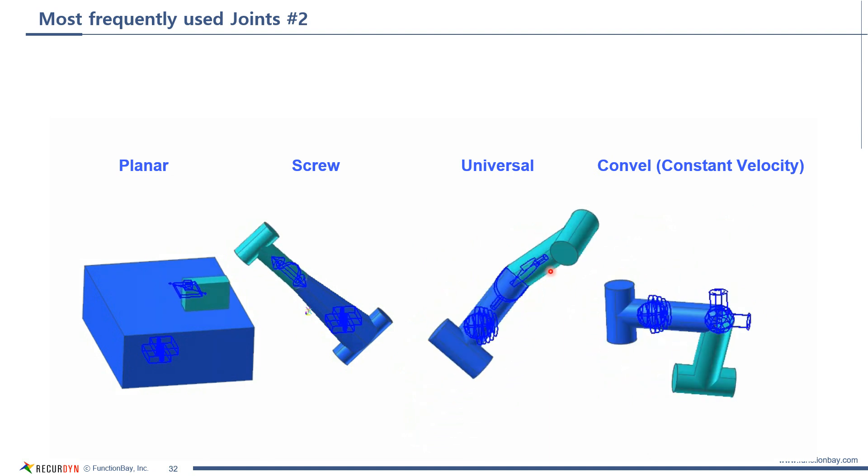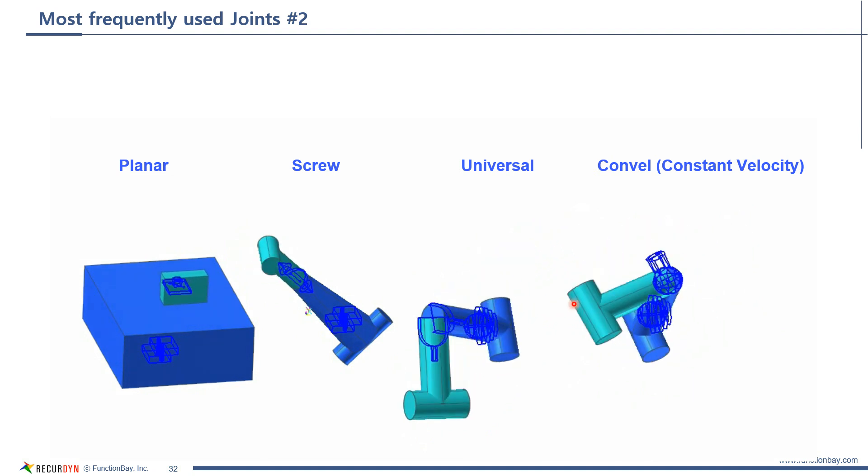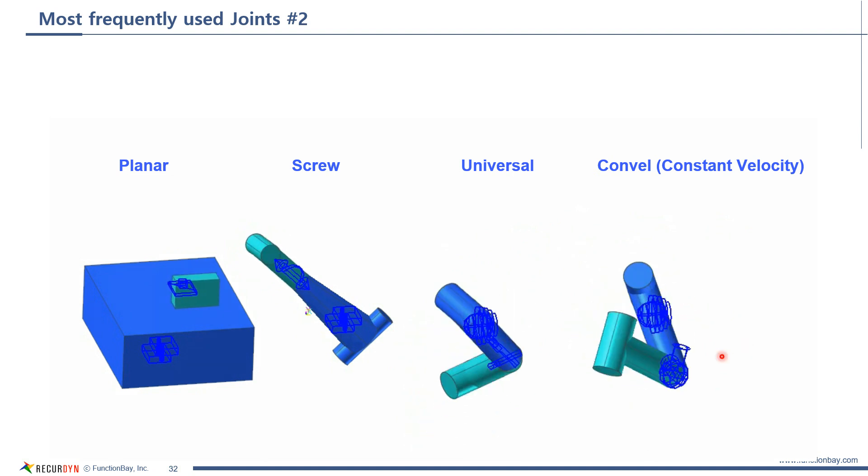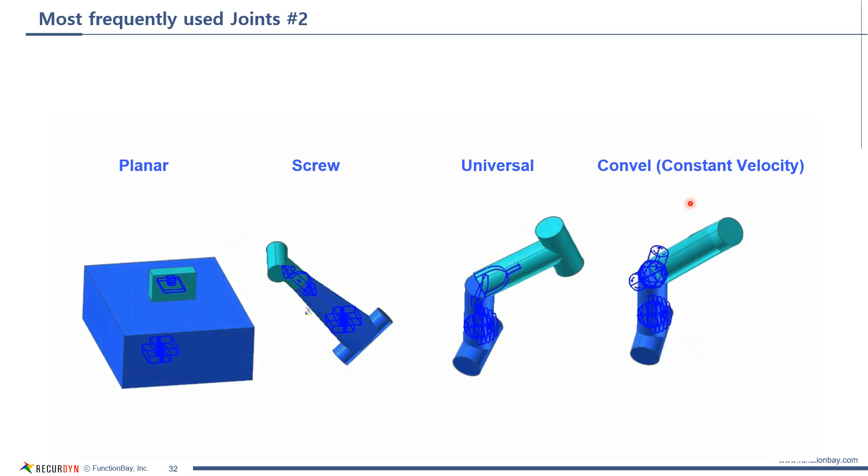Universal joint has two rotational degrees of freedom, but bodies rotate while they maintain a 90-degree angle. For example, constant velocity of action body and base body becomes the same.